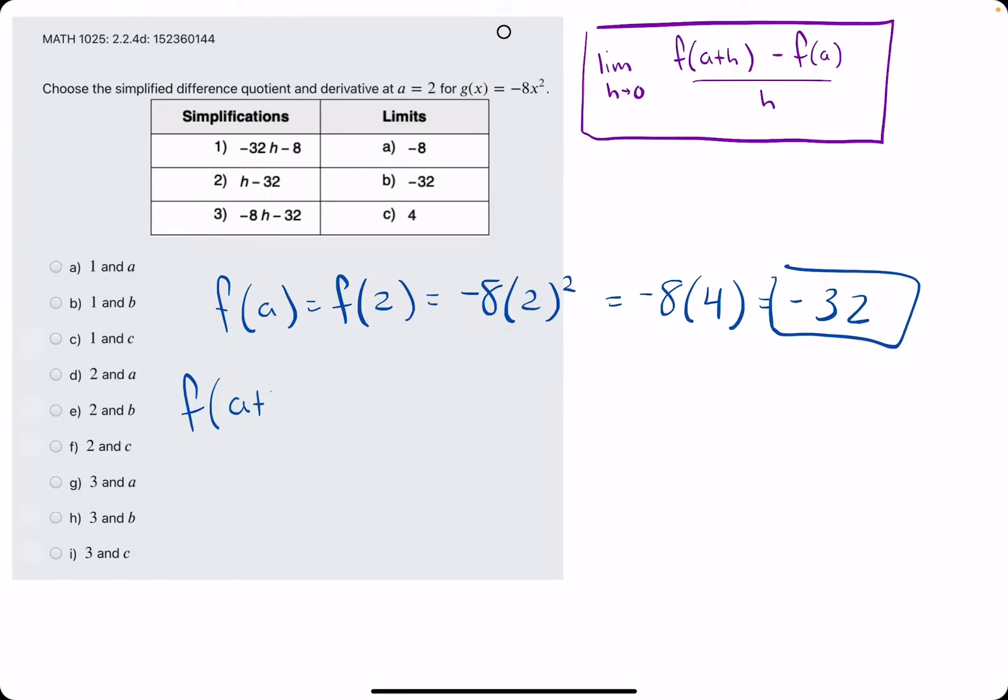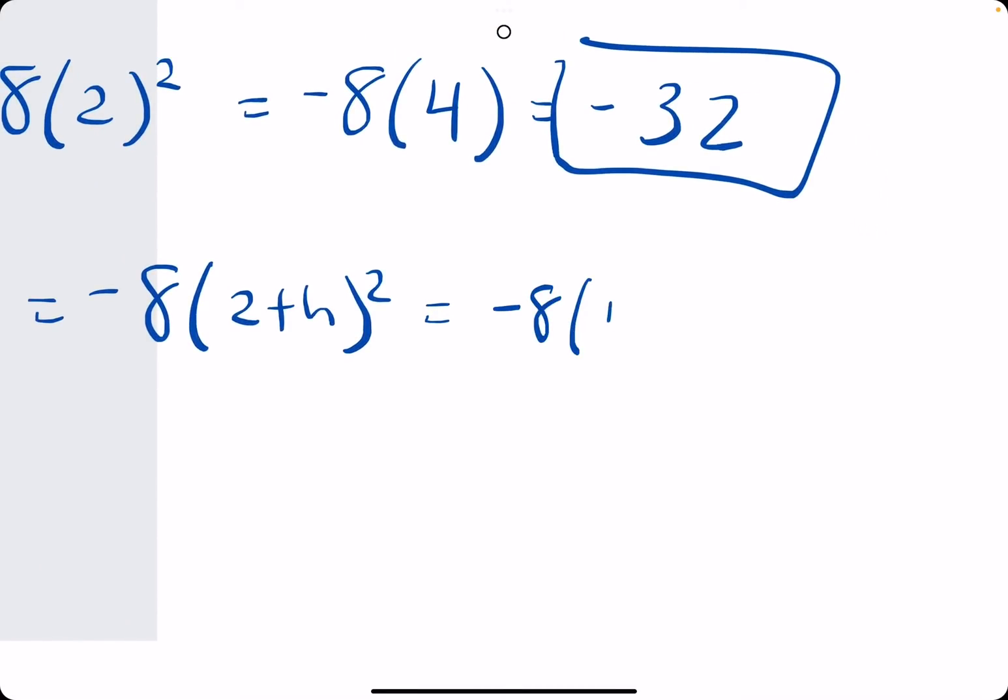We want f of a plus h, which is f of 2 plus h. So we have negative 8 times 2 plus h squared. 2 plus h squared is 2 squared, plus 2h times 2,